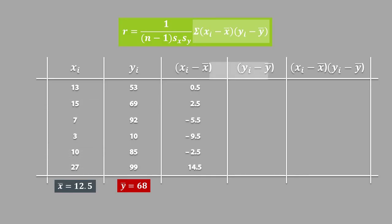For the y values, we would have 53 minus 68, which is equal to negative 15. We are basically doing the same process for each y value.